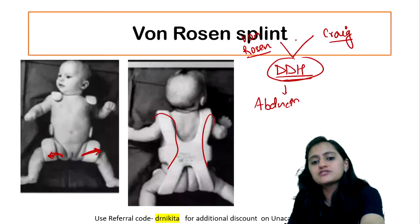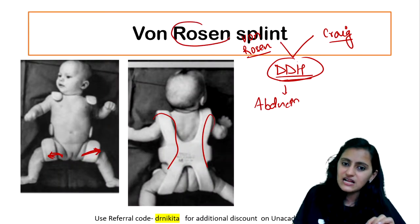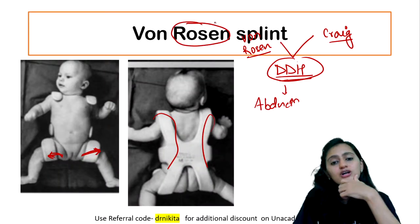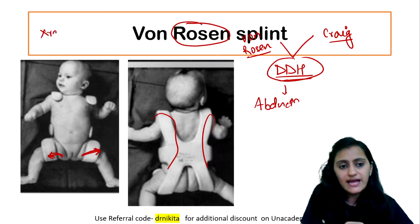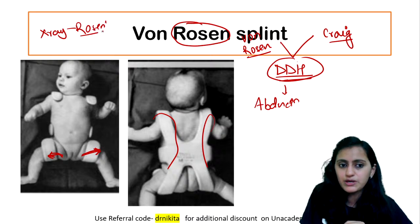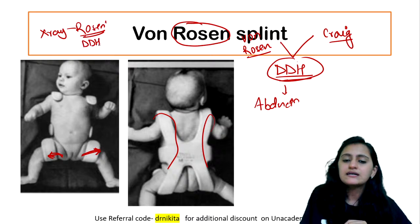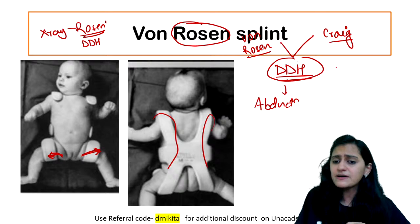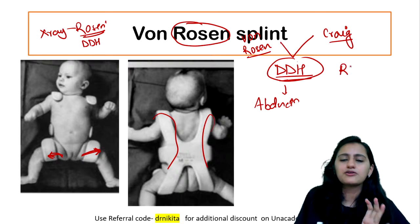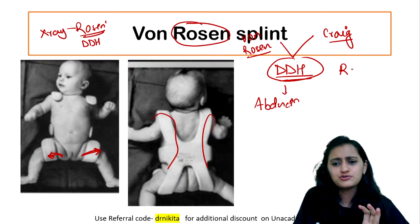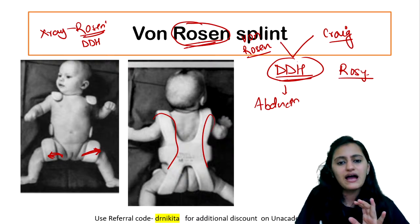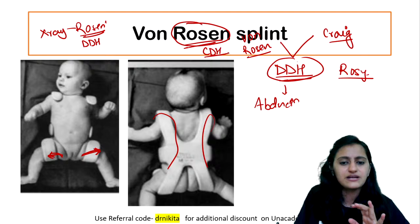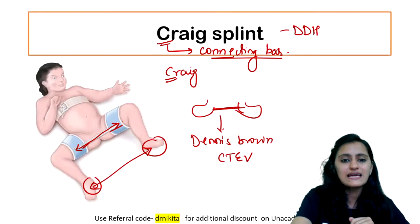From the splint itself you can remember the X-ray is Rosen's view — Von Rosen's view is used for DDH. Remember: rosy baby — neonate — Von Rosen. In babies you have DDH or CDH. Rosy baby DDH — and you have Craig, which has a connecting bar between the two thighs. This is the Craig splint. The Dennis Brown splint also had two shoes connected by a bar, but that was used for CTEV.